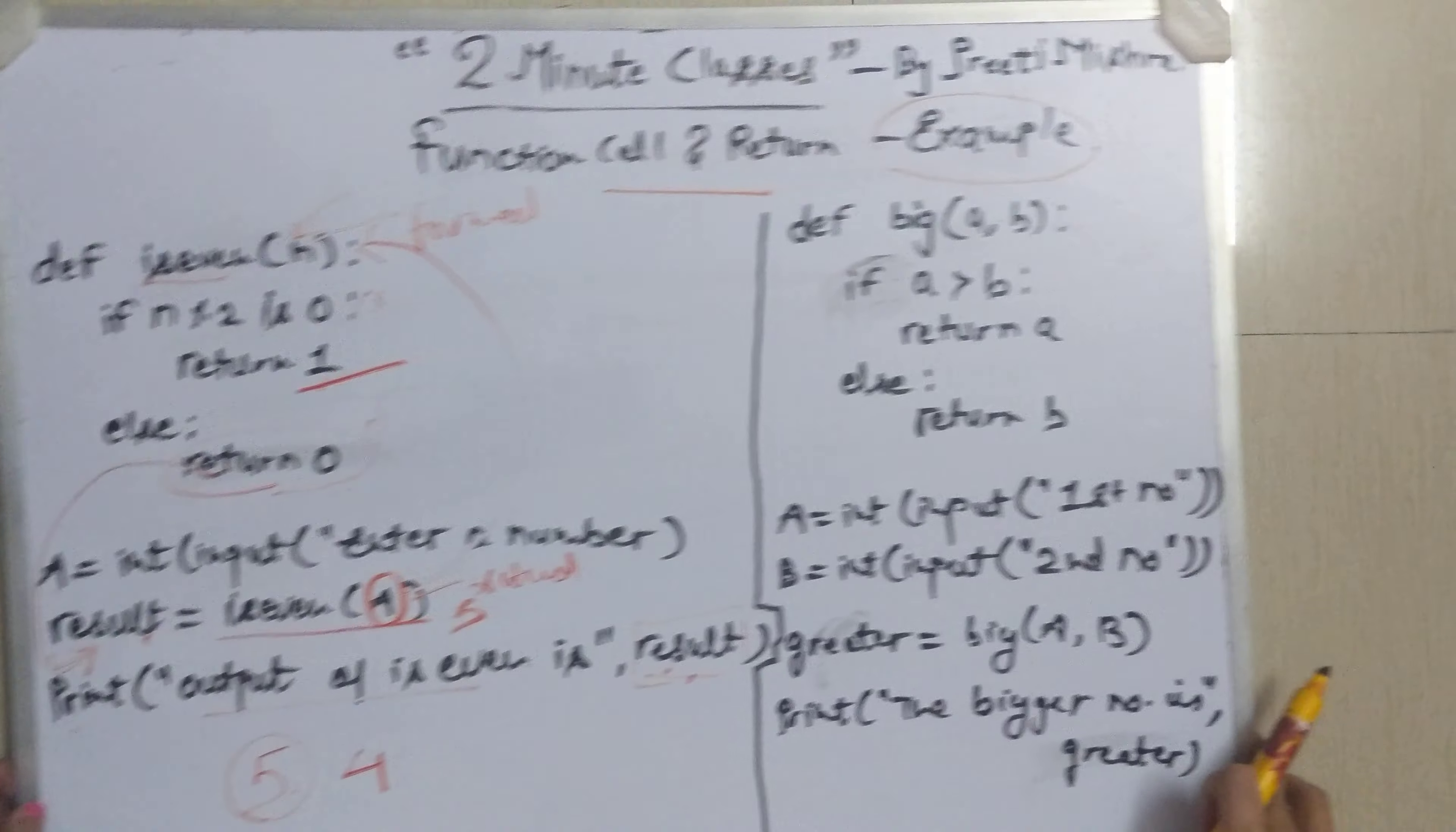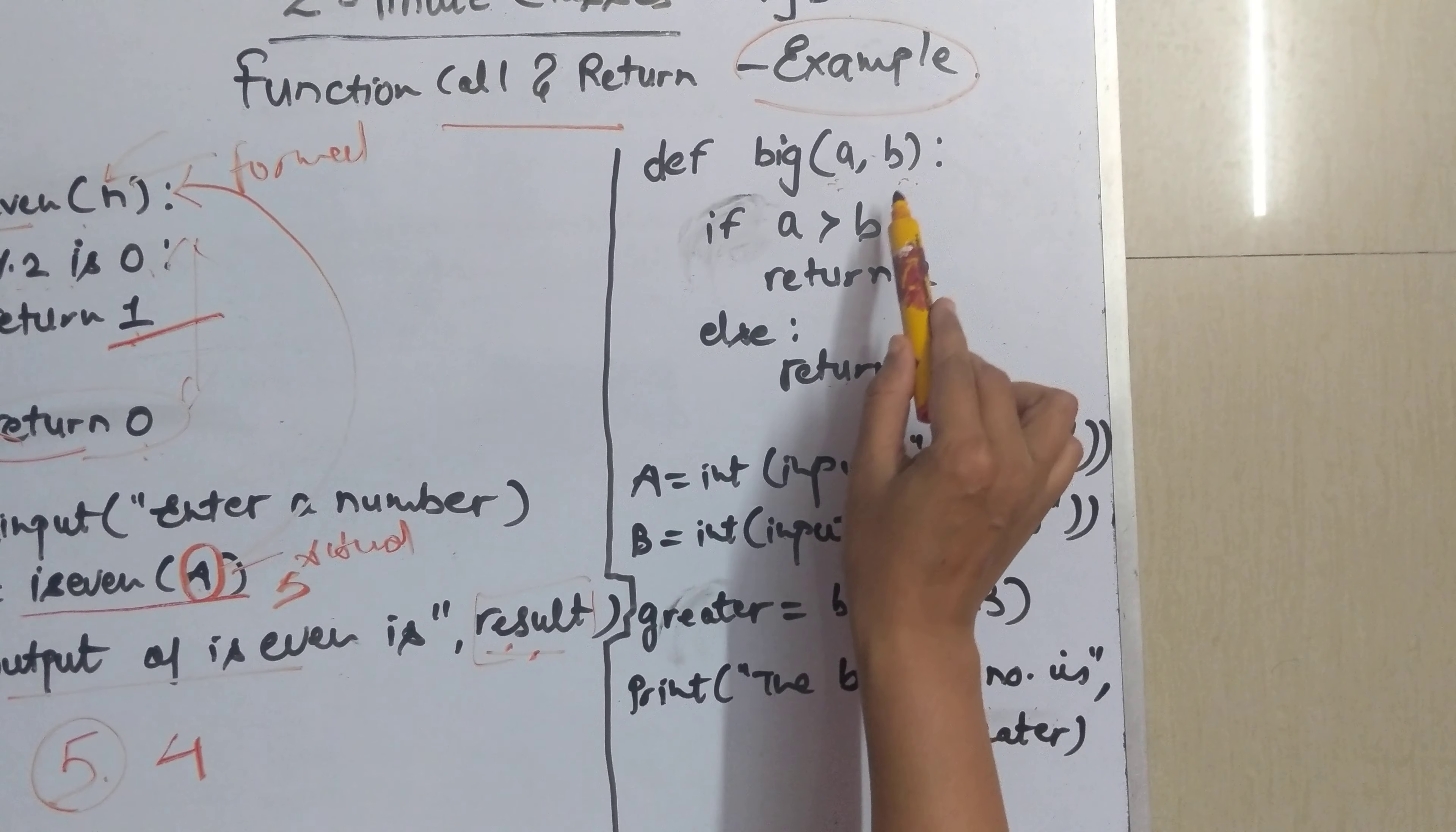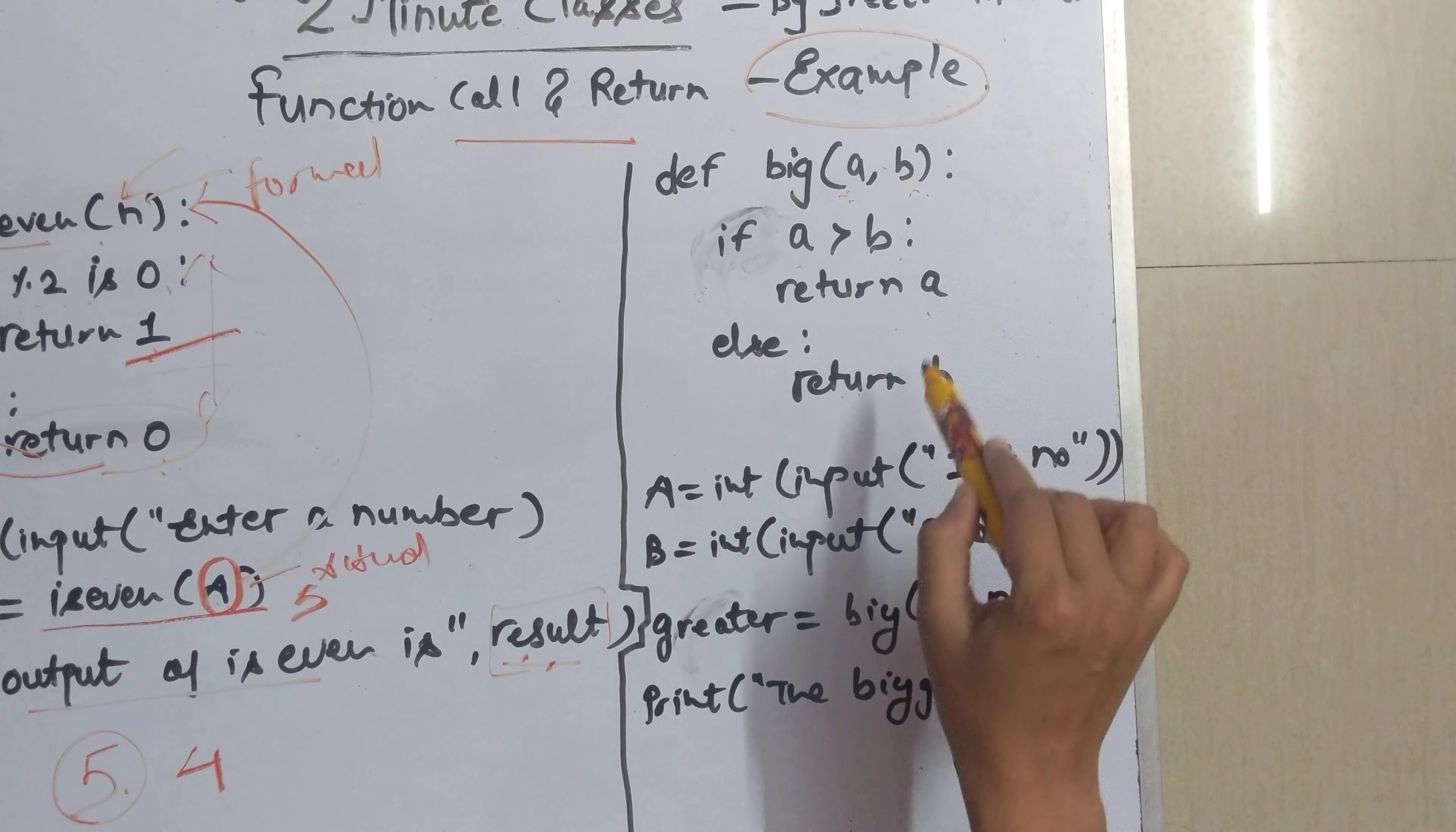Now let us check one more example. I have written one more function which is big where I am checking which is bigger out of these two numbers. So there are two numbers a and b. If a is greater than b then I am returning a otherwise I am returning b. So this function is returning the larger number.